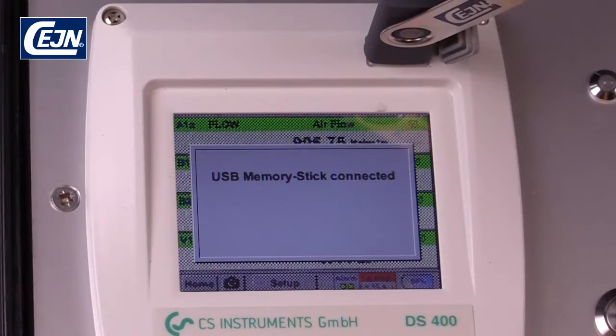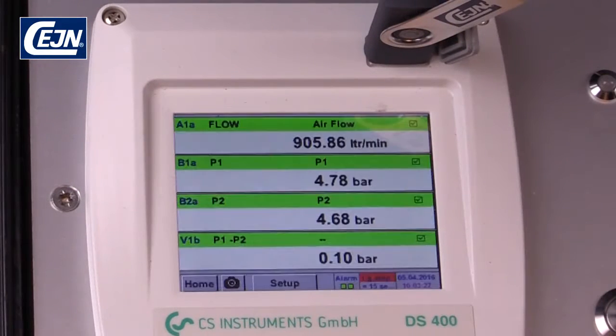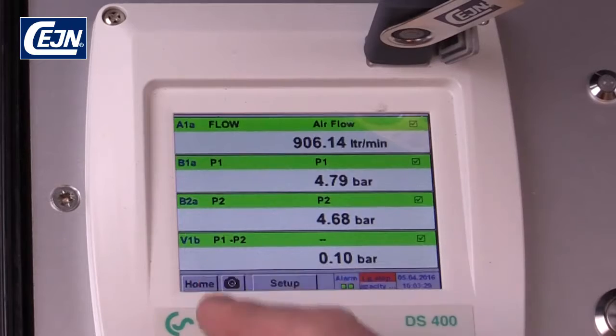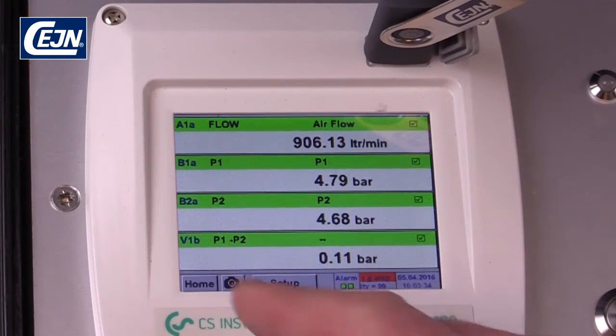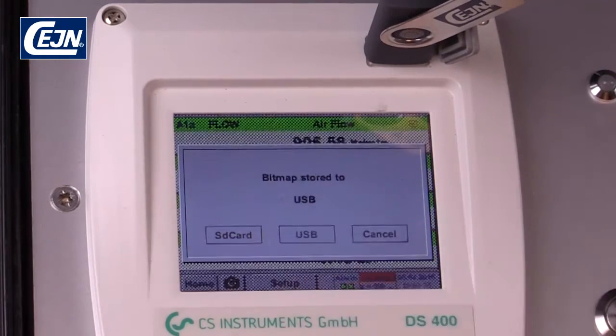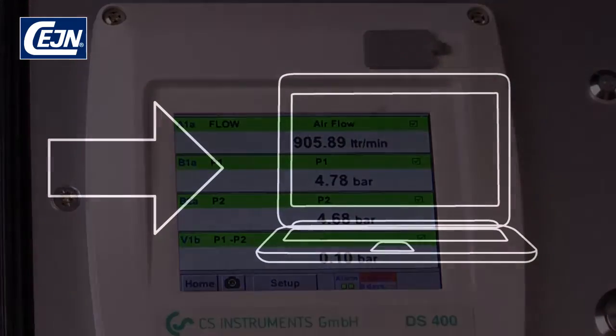To make a report, you can connect a USB memory stick and take a screenshot from the controller. Simply touch the camera icon and save the screenshot to the USB. Always make two pictures to be 100% sure that you have it. Disconnect the USB and plug it into your computer.